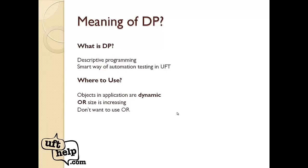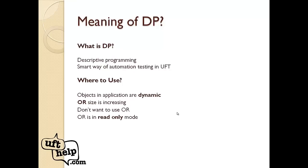Another scenario is when we don't want to use the object repository at all. For example, if our application under test is not ready yet but the dev team has shared object properties, we use those properties in DP so our code is ready. Also, if the object repository is in read-only mode — when using a shared OR, one person has read/write access while others have only read access — we go for DP.